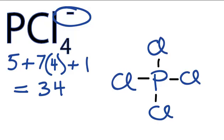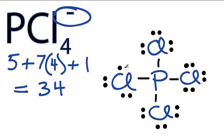Now we'll start going around the outside and putting valence electrons on the chlorines to give them 8, or an octet. So we have 2, 4, 6, 8, 10, 12, and 32.